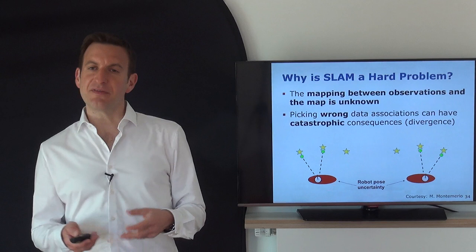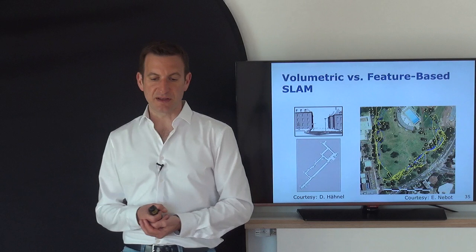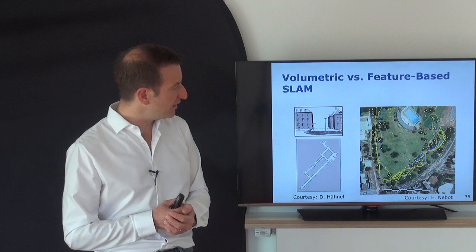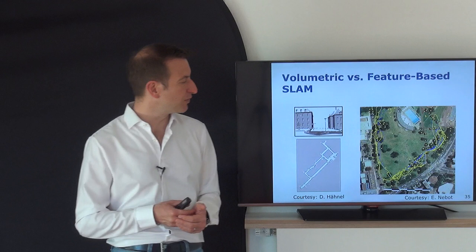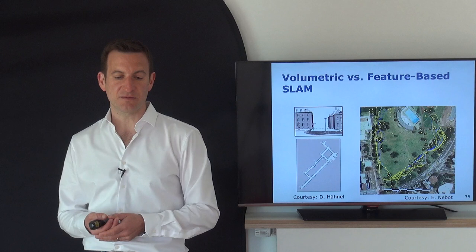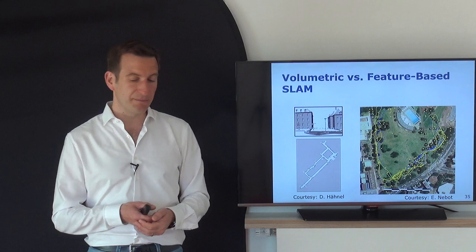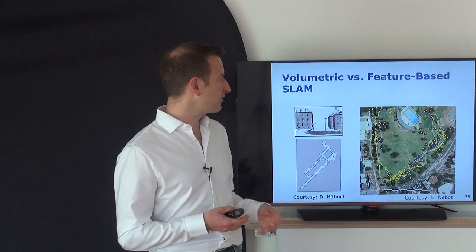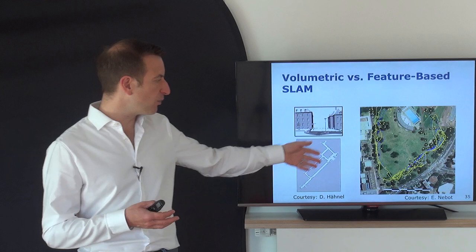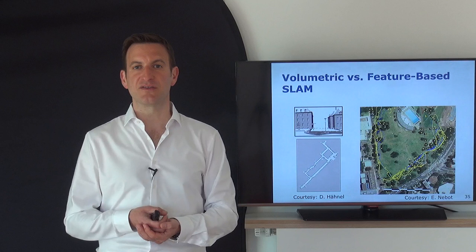Regarding map representations: one example is Victoria Park in Sydney, a famous SLAM dataset where systems estimated the trunks of trees or pole-like features. Other representations include dense 3D scans of environments, floor plan-like grid maps, and volumetric or planar representations. These are all different map representations — from volumetric to feature-based — that a SLAM system can handle.